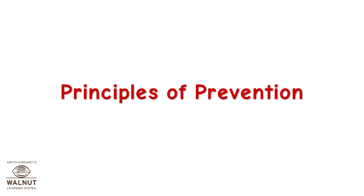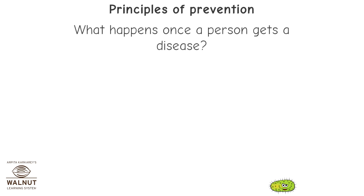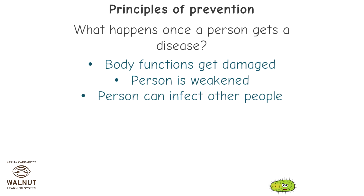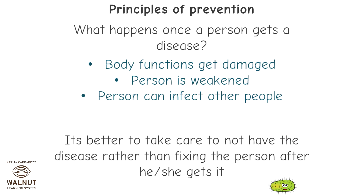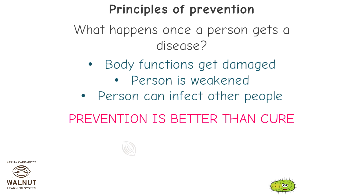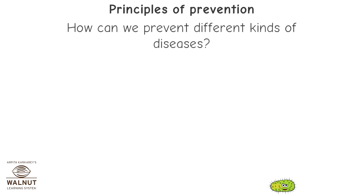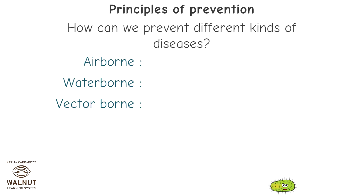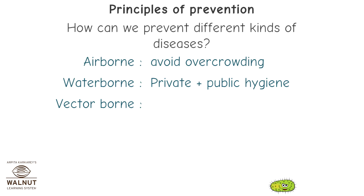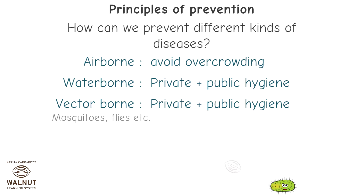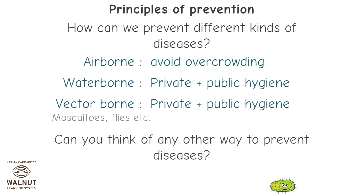Principles of Prevention. What happens once a person gets a disease? The body functions get damaged, the person is weakened, and the person can infect other people. It's better to take care not to have the disease rather than fixing the person after they get it — prevention is better than cure. How can we prevent different kinds of diseases? For airborne diseases: avoid overcrowding. For waterborne diseases: maintain private and public hygiene. For vector-borne diseases — meaning by mosquitoes, flies, etc. — maintain private and public hygiene.